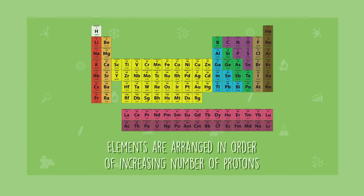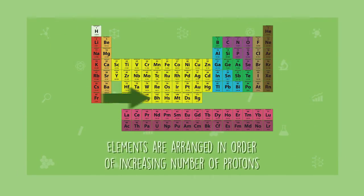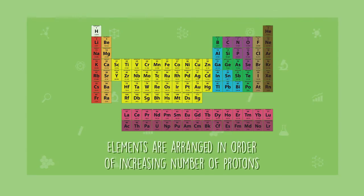Elements are arranged on the periodic table in order of increasing number of protons. Remember that protons are the positively charged particles that, together with neutrons, make up the nucleus in the centre of the atom. The number of protons in an atom determines what the element is.